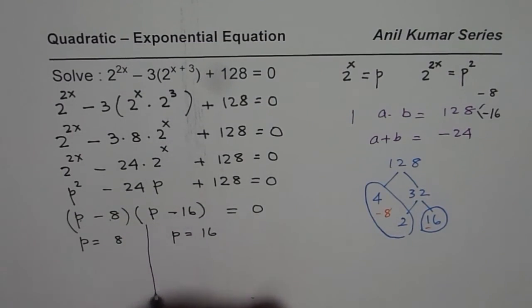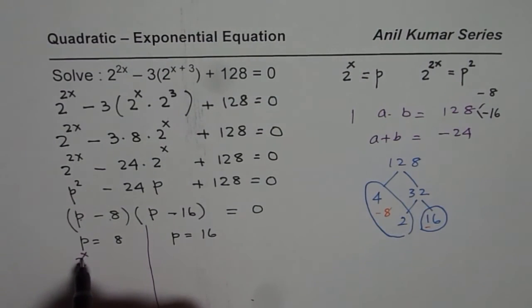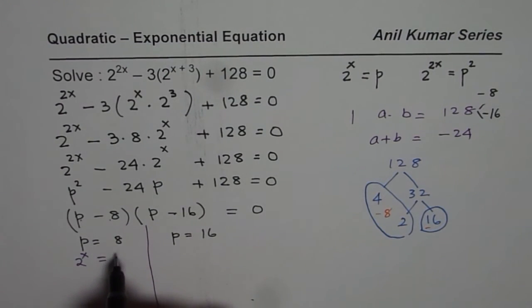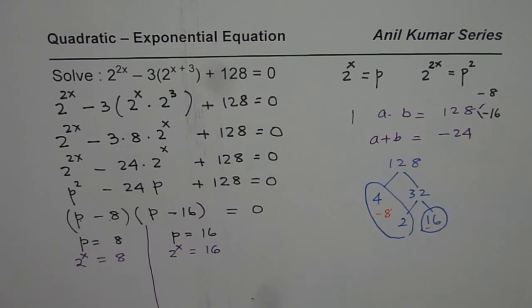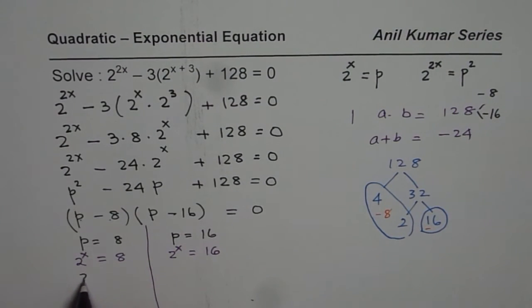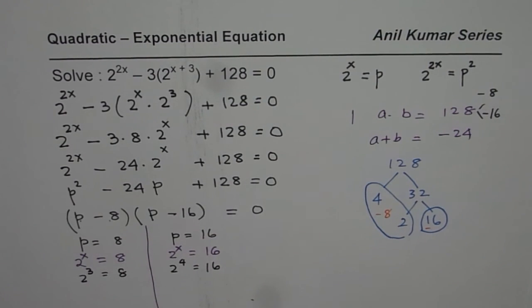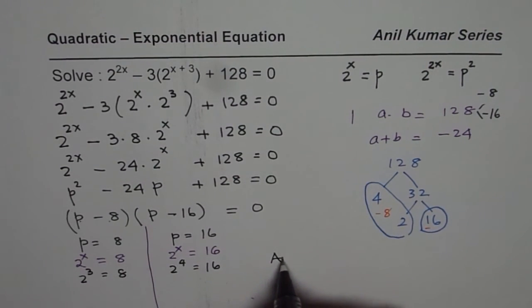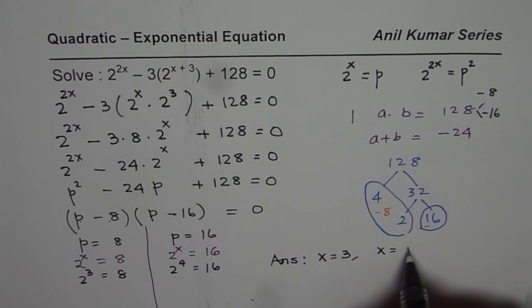Now the question is what is the value of x? We know p is 2 to the power of x. Let's substitute it back. So we get 2 to the power of x is equal to 8 and 2 to the power of x is equal to 16. Now we have to find what is x. That is not very difficult now. I can write this as 2 to the power of 3 is 8 and 2 to the power of 4 is 16. So that gives me two possible solutions and that is my answer. My answer is x is equal to 3 or x is equal to 4.